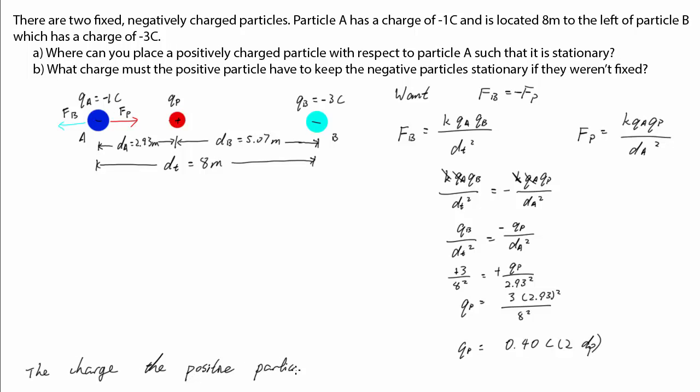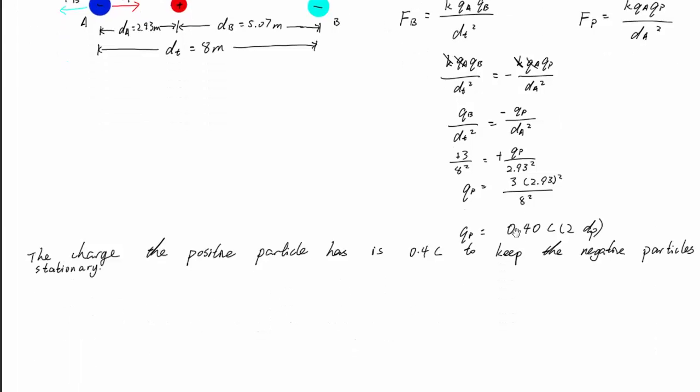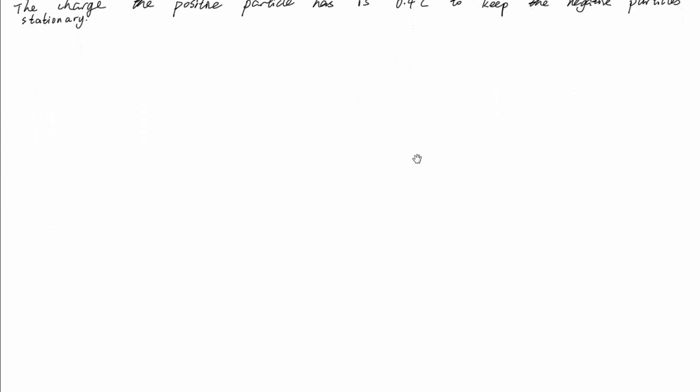Now, if we run through this whole process again with particle A fixed and try to balance the forces on particle B, we'll actually get the same answer for the charge of the positive particle. It isn't immediately obvious why this should be the case, but if we dig a bit deeper, we can find out why it must be so.